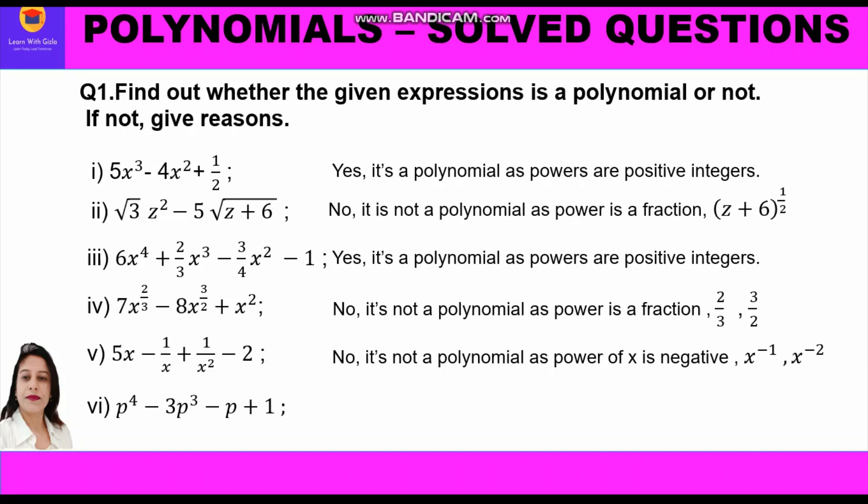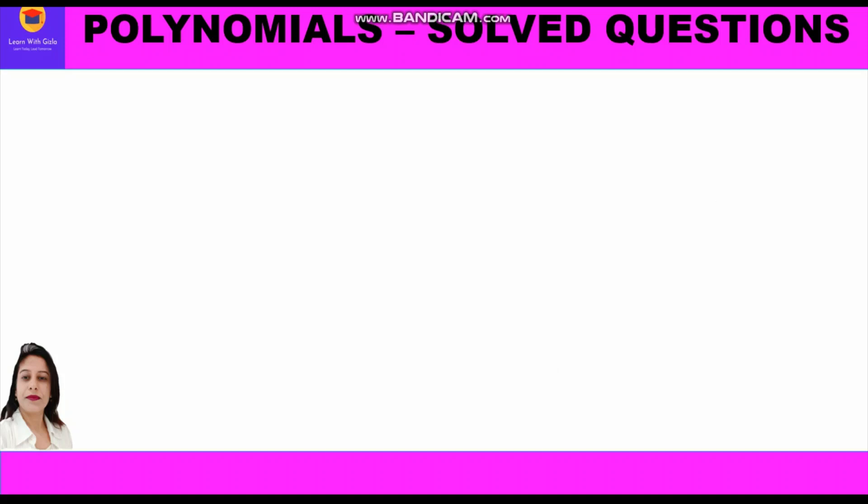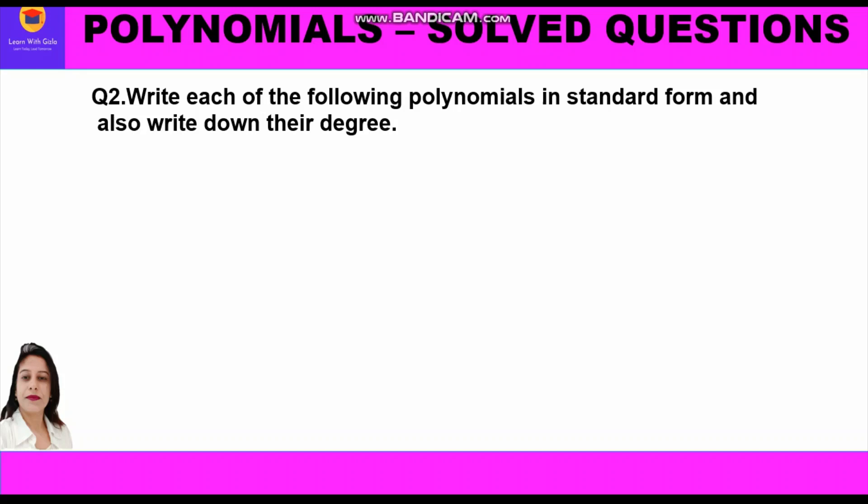Part 6: p⁴ − 3p³ − p + 1. The powers of p are all positive integers, so yes, it is a polynomial.